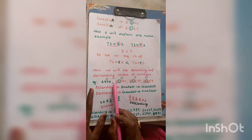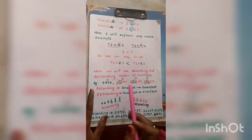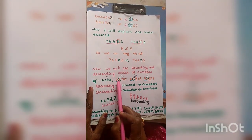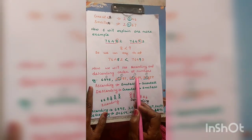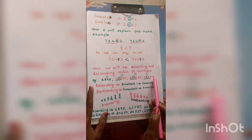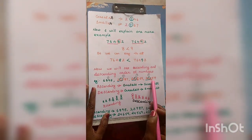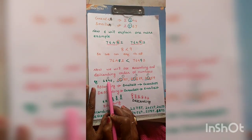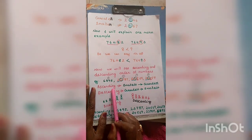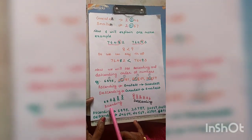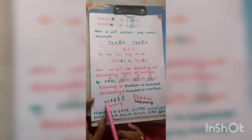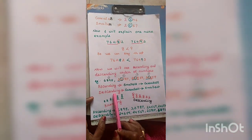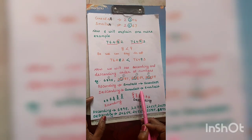Here, 4 numbers are given. First, you have to compare the number of digits in each. Three of the numbers have 5 digits and one number has only 4 digits, so that will be the smallest number. In ascending order, we arrange numbers from smallest to greatest. In descending order, we arrange numbers from greatest to smallest.